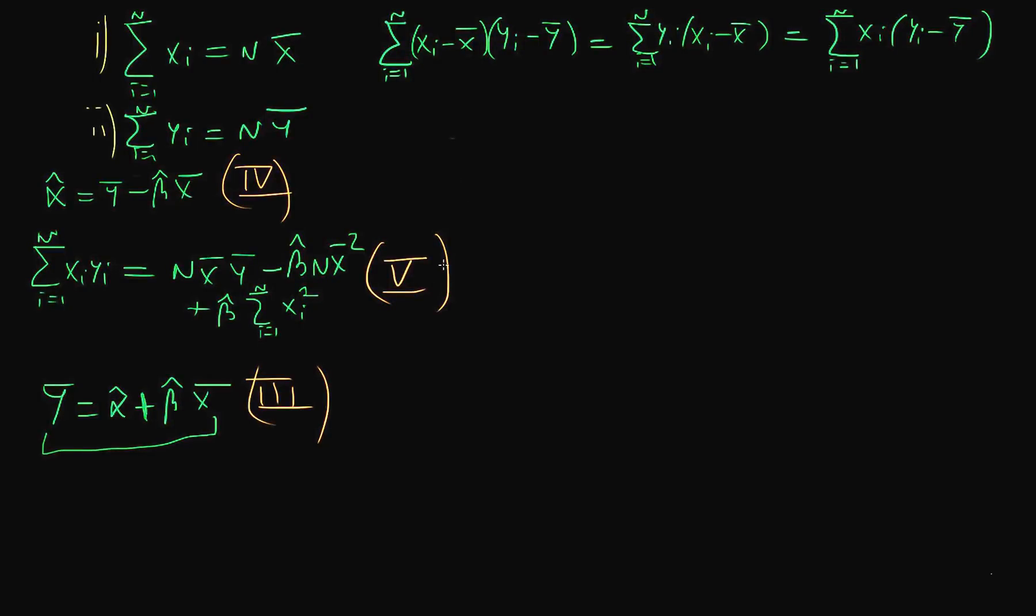Hi, thanks for joining. This is the last part in deriving the explicit forms for alpha hat and beta hat, the least squares estimates or estimators of the parameters of a line of best fit.